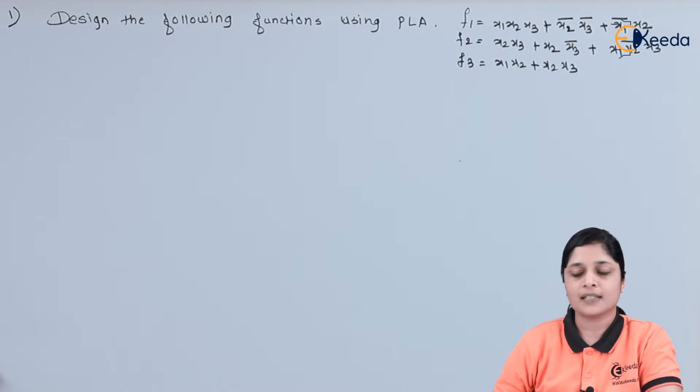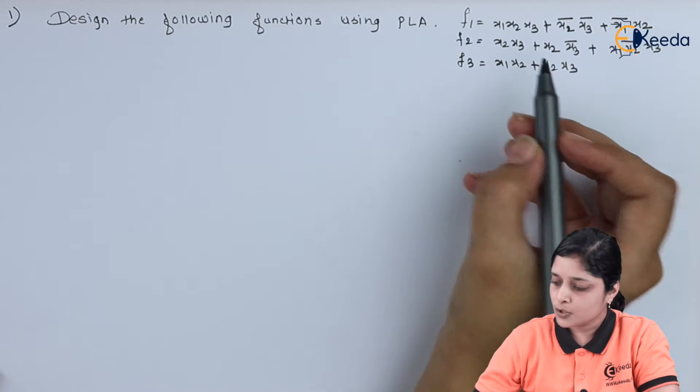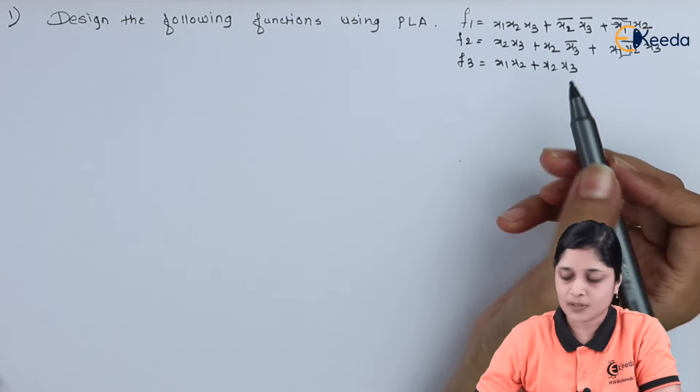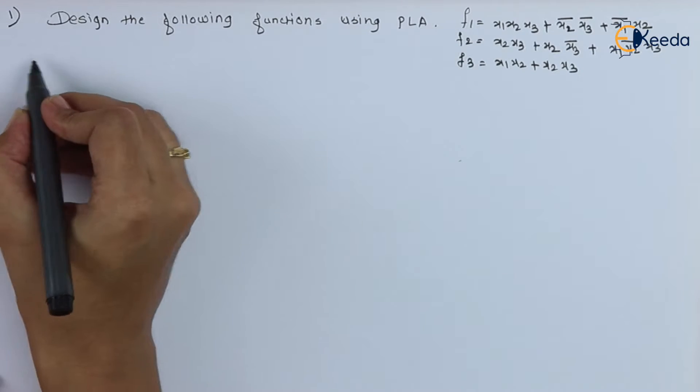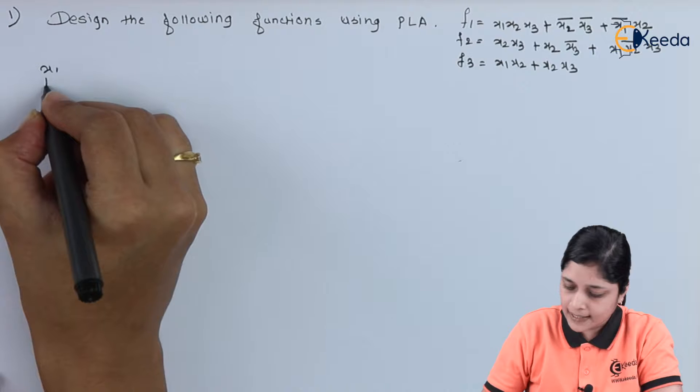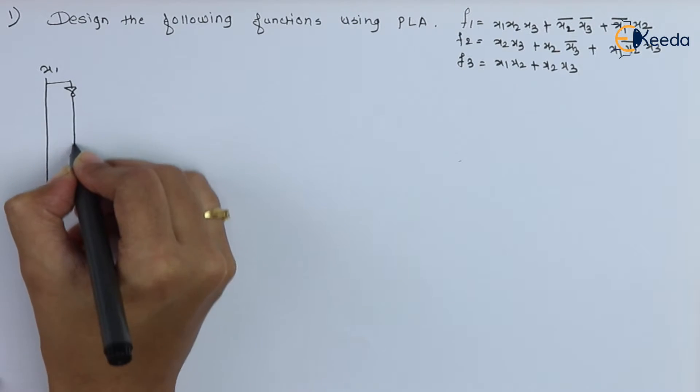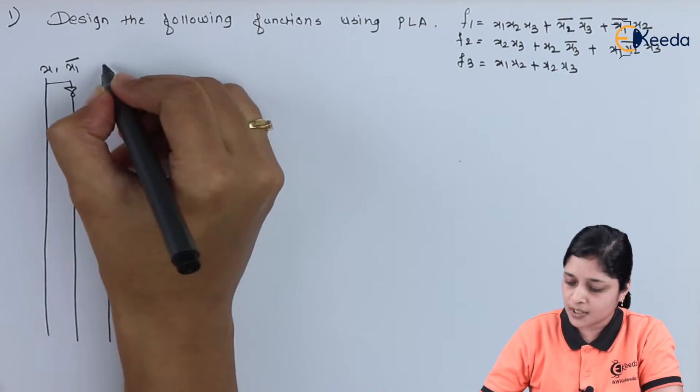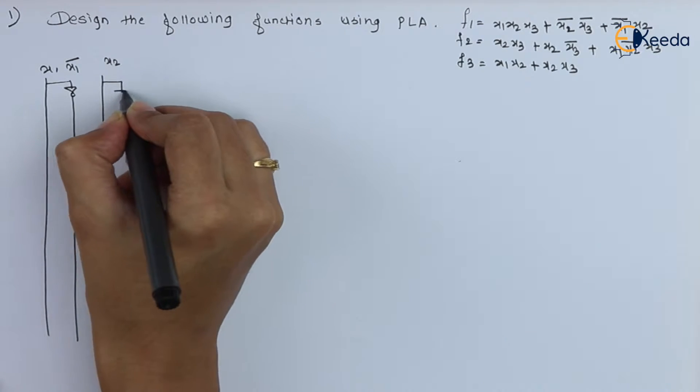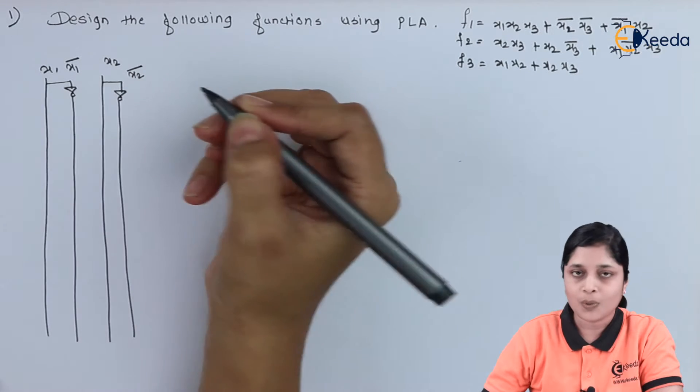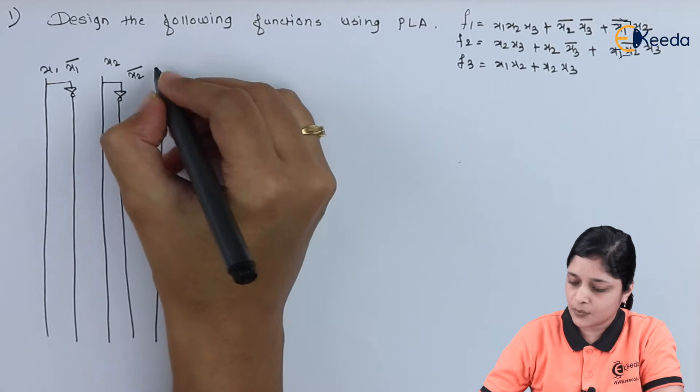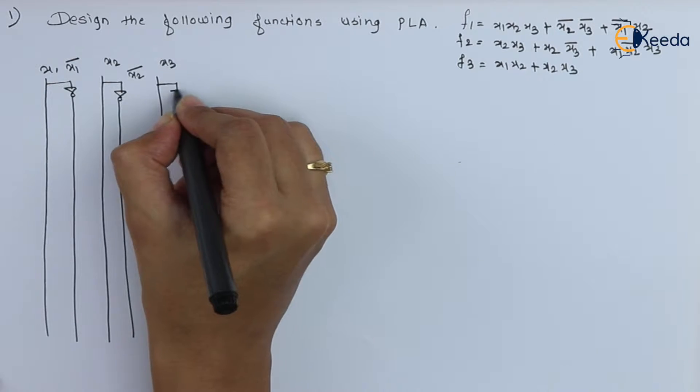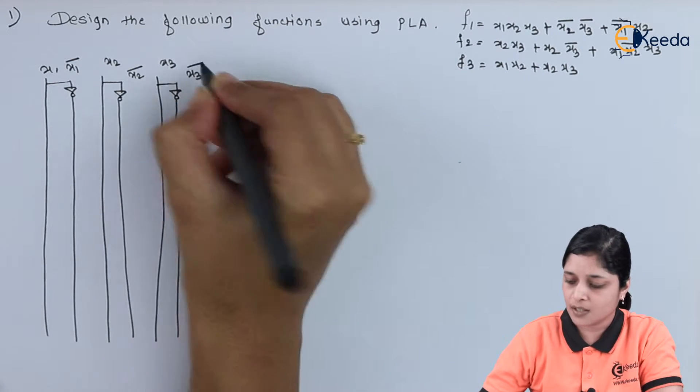The most important point is in PLA, AND gate and OR gate both basic logic gates are programmable. So, here you have to identify the input variables. We have here three input variables. This is your X1. This becomes your X1 bar. After that you have X2. This becomes your X2 bar. Then we have X3. And this is your X3 bar.